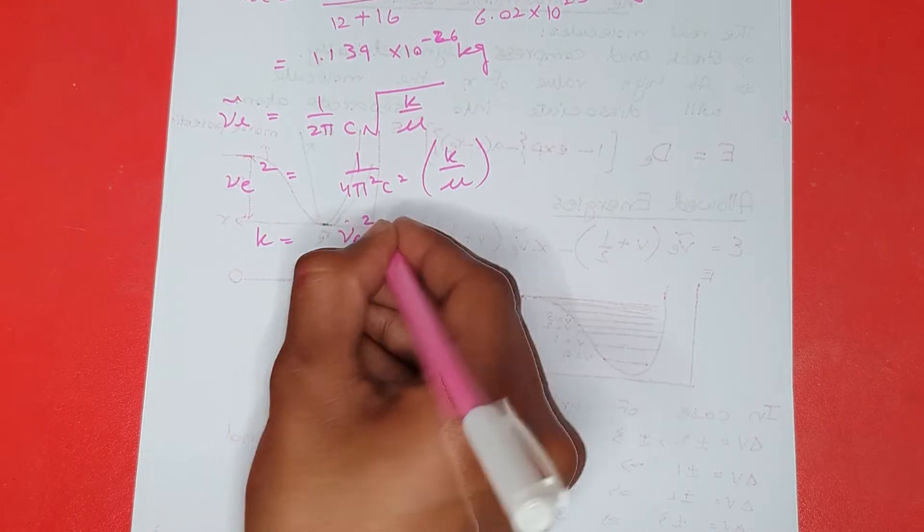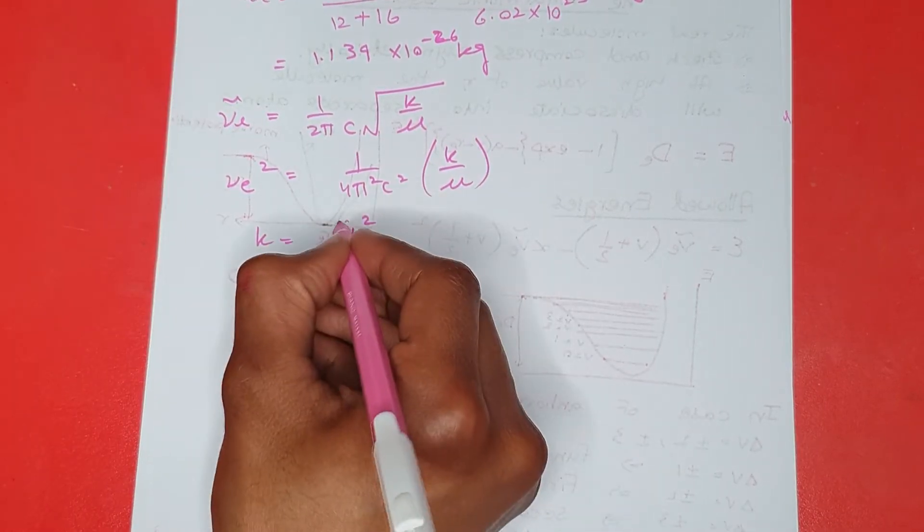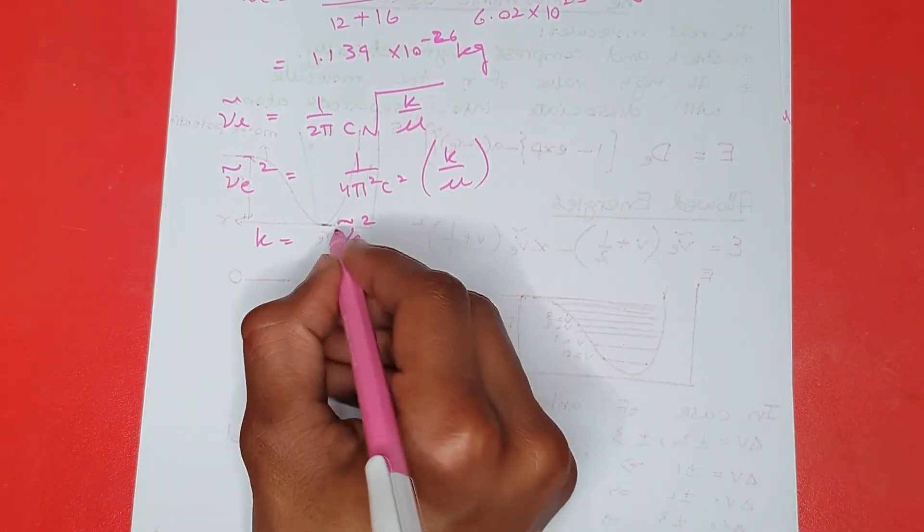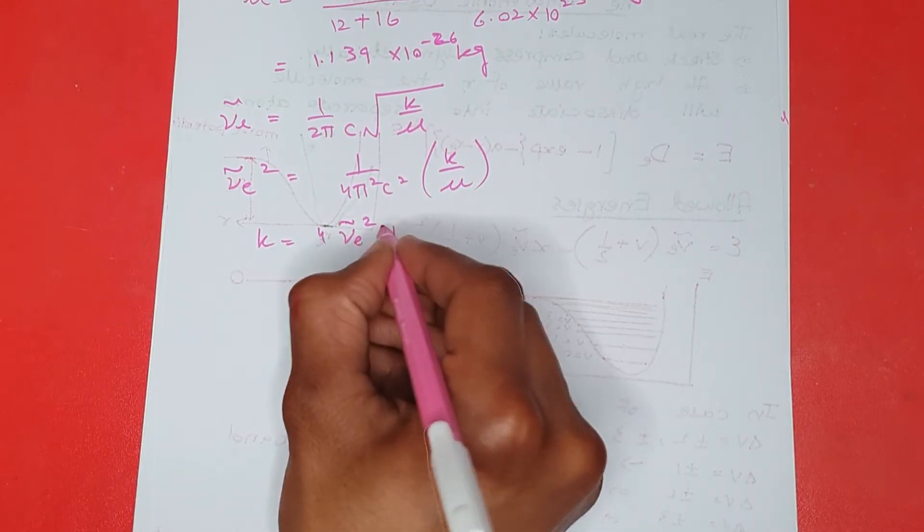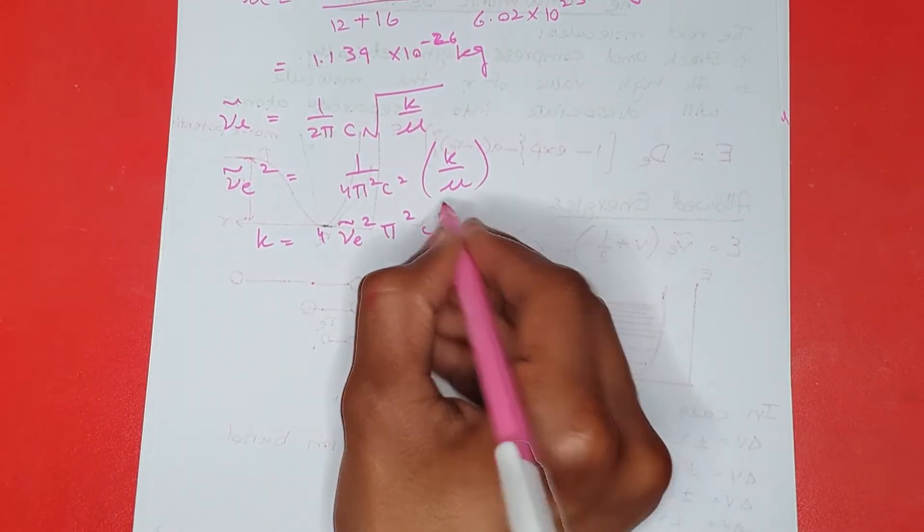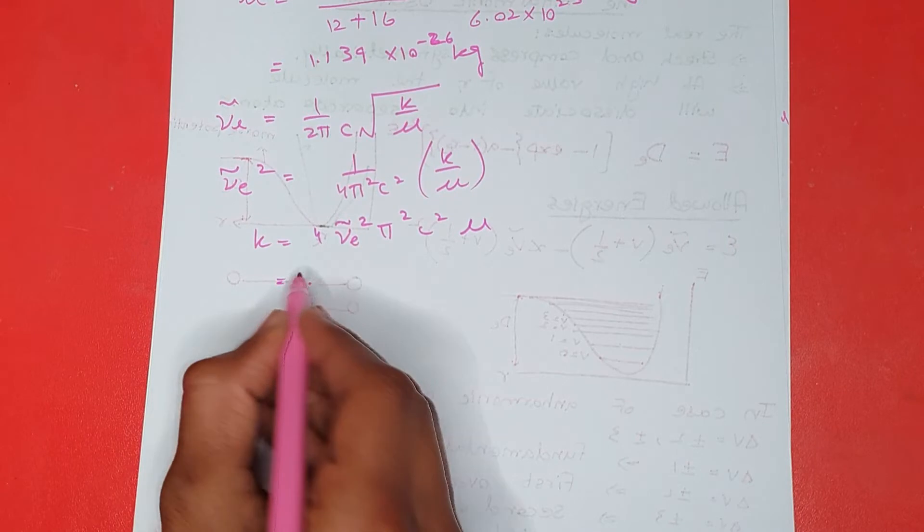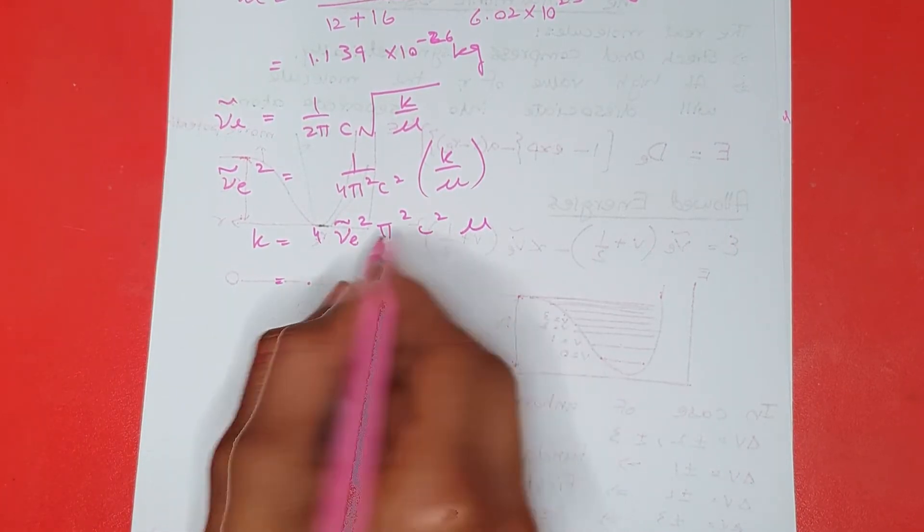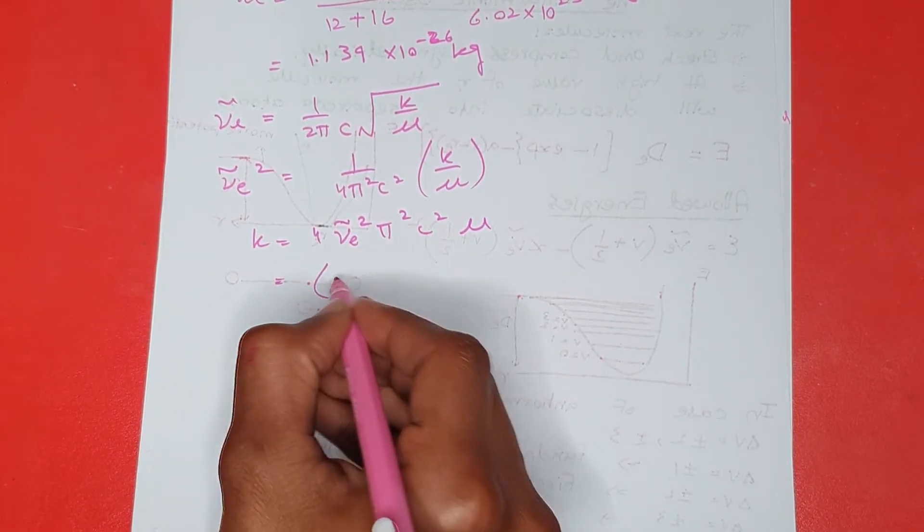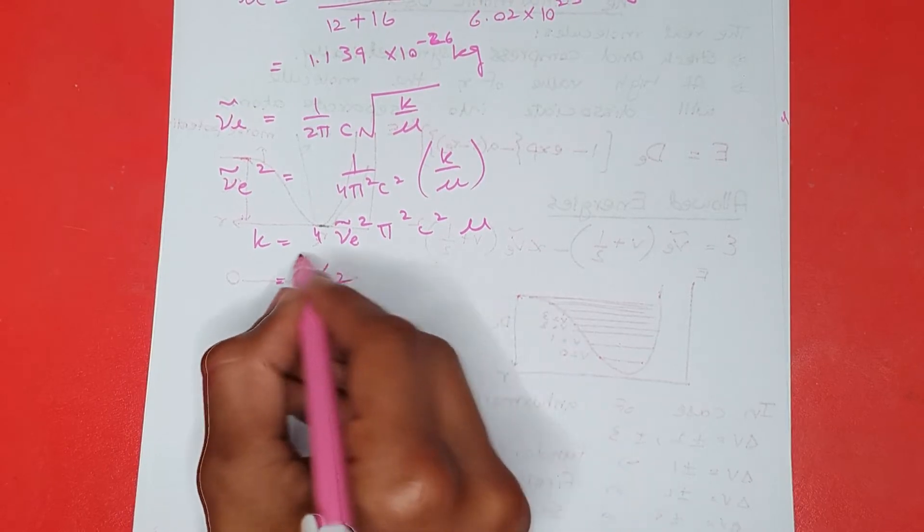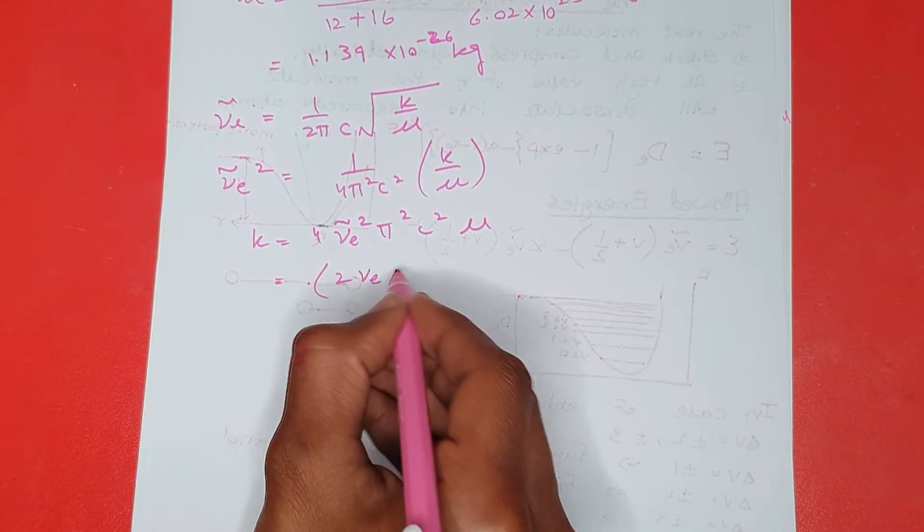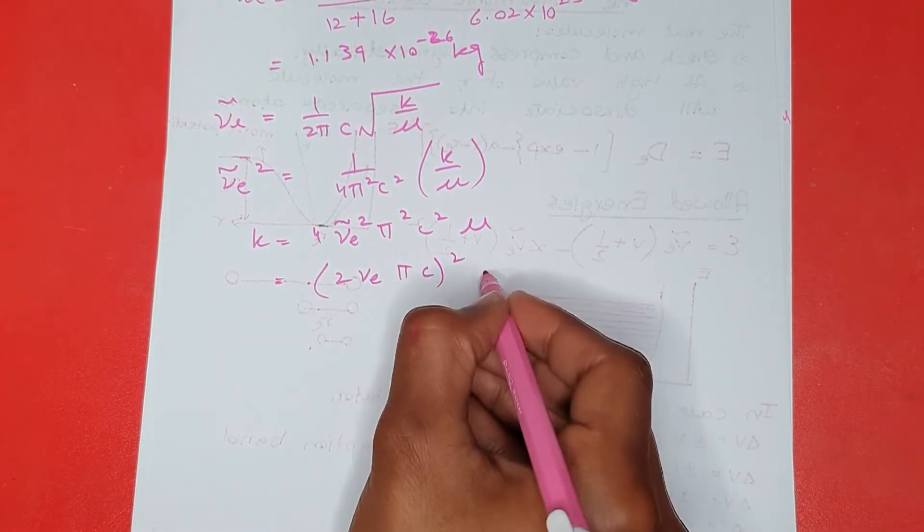I get an answer for K to be equal to VE squared, and this VE is actually the wave number, so VE squared multiply 4 pi squared C squared into mu. Now if I apply all the values, I can write it as 2 VE pi C whole squared mu.